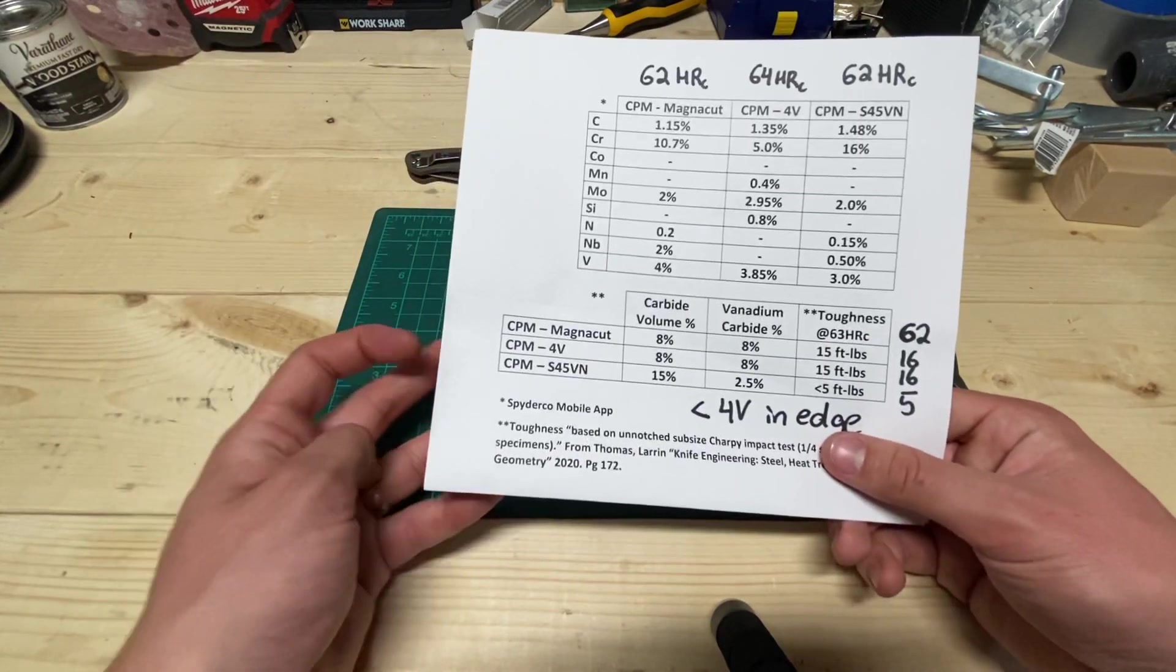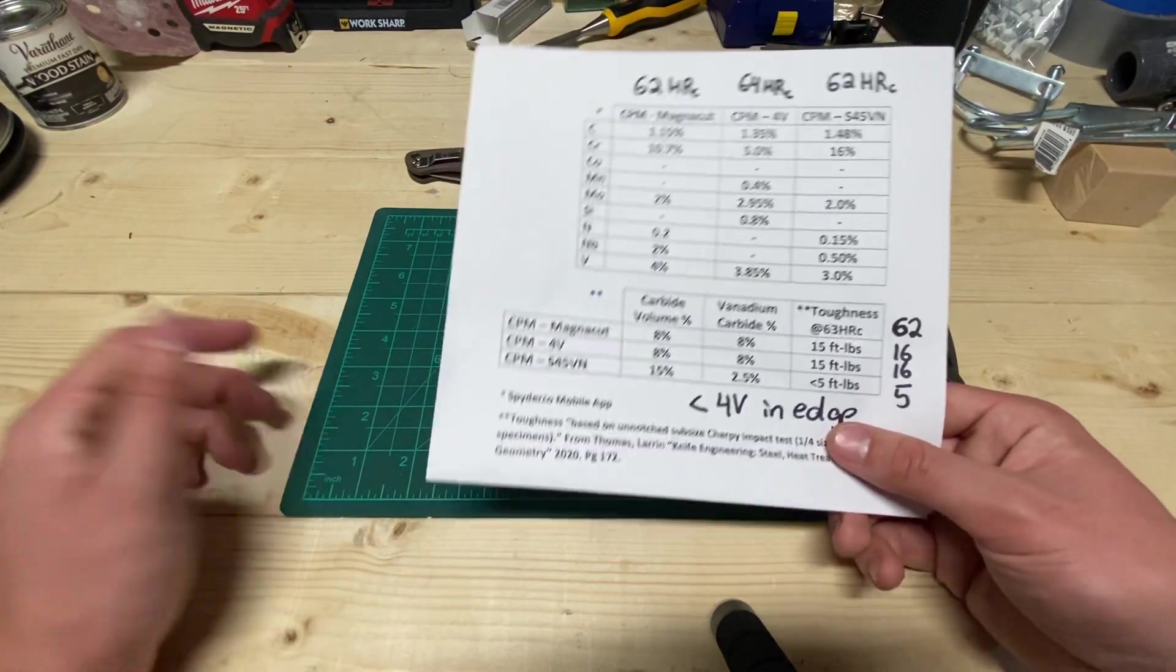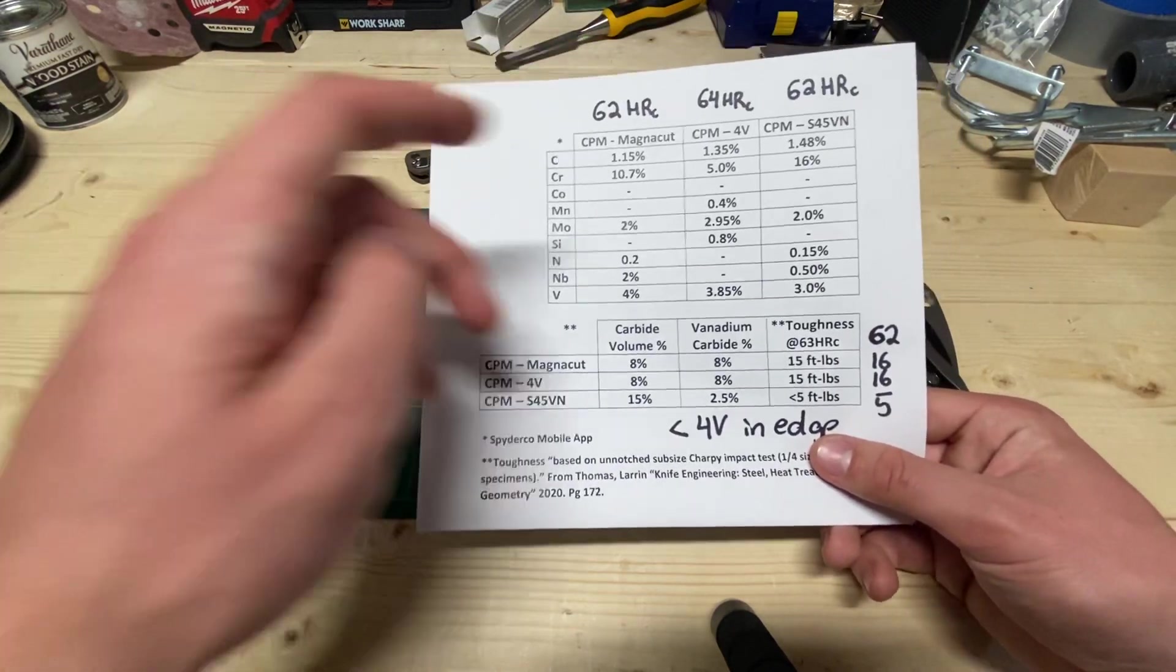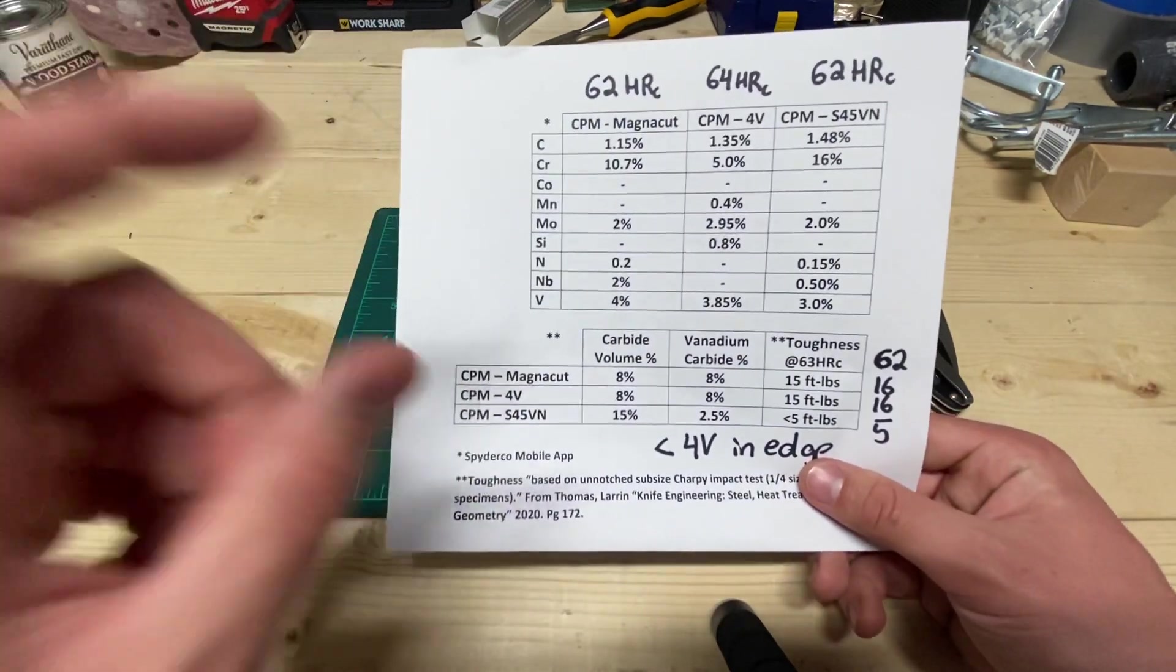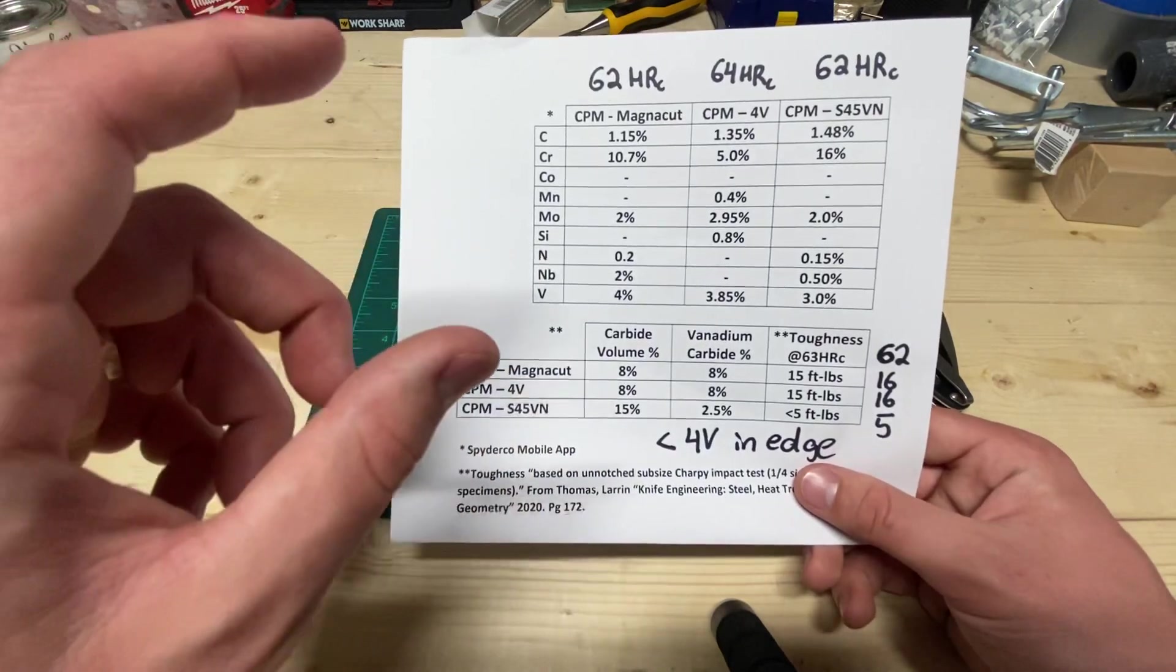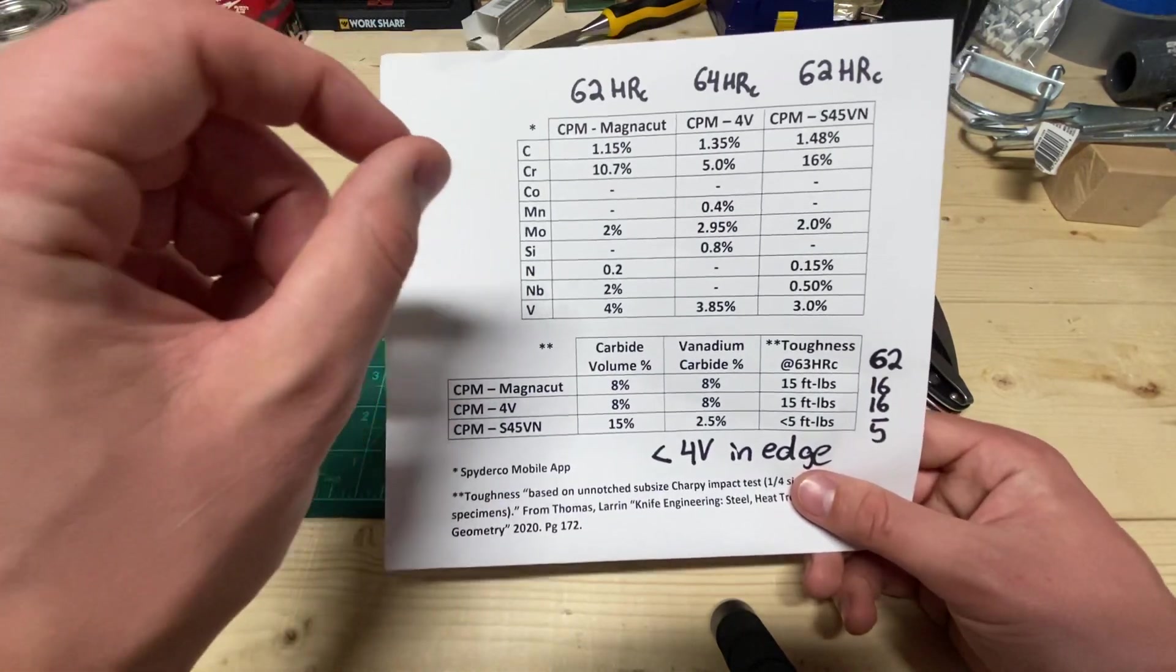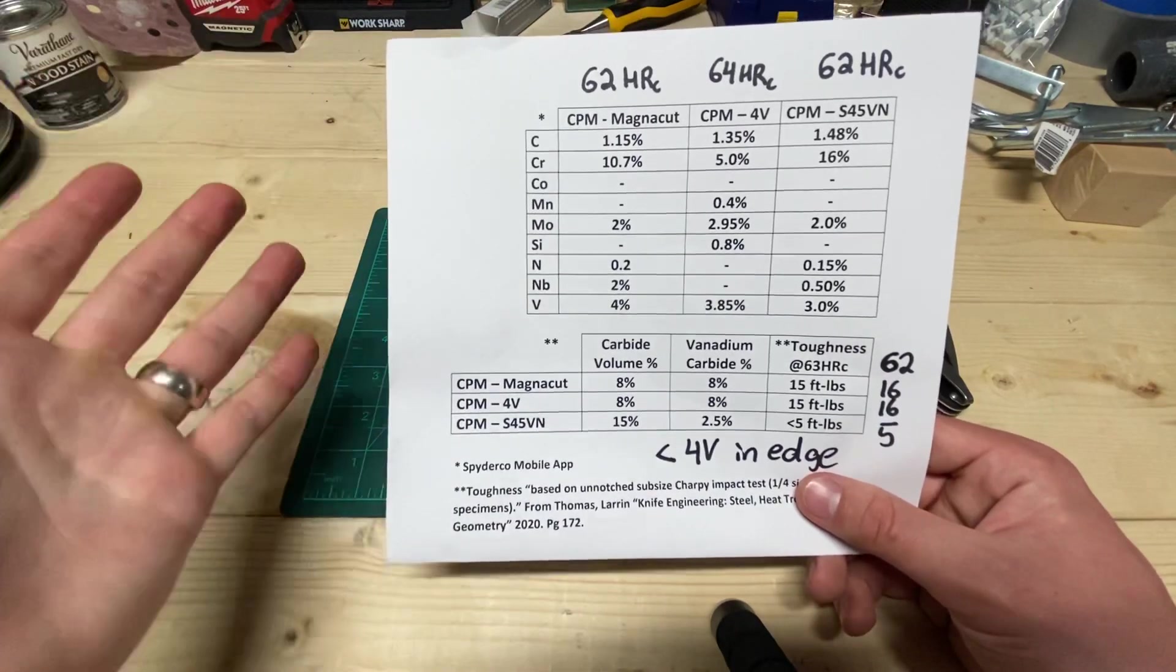It's a brand new steel that Dr. Larrin Thomas developed and essentially his goal was to make a stainless 4V. So he's targeting 4V in terms of edge retention and he wanted it to be stainless and he was hoping that while doing that he'd still maintain very high levels of toughness.